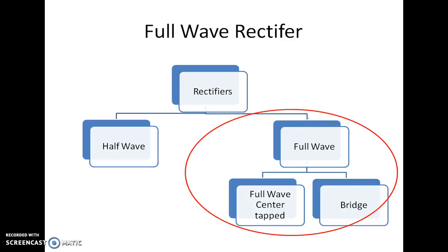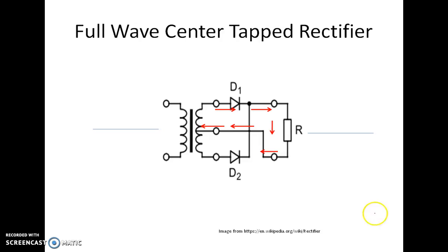Next is the full-wave rectifier. We are going to see two types: center tapped and bridge. Let's start with the center tapped rectifier. Here we have a very special type of transformer which is designed. The secondary of the transformer is tapped at the center.